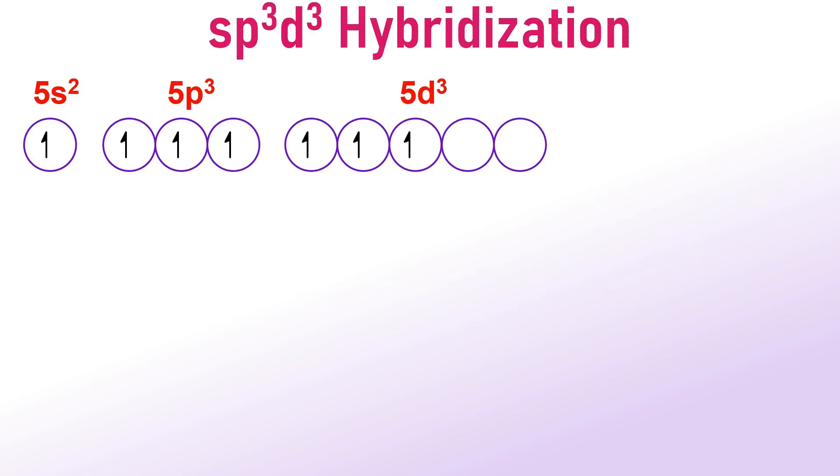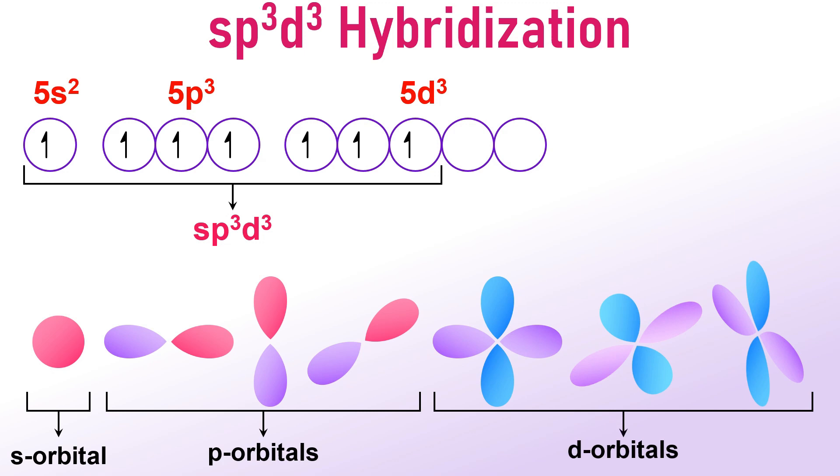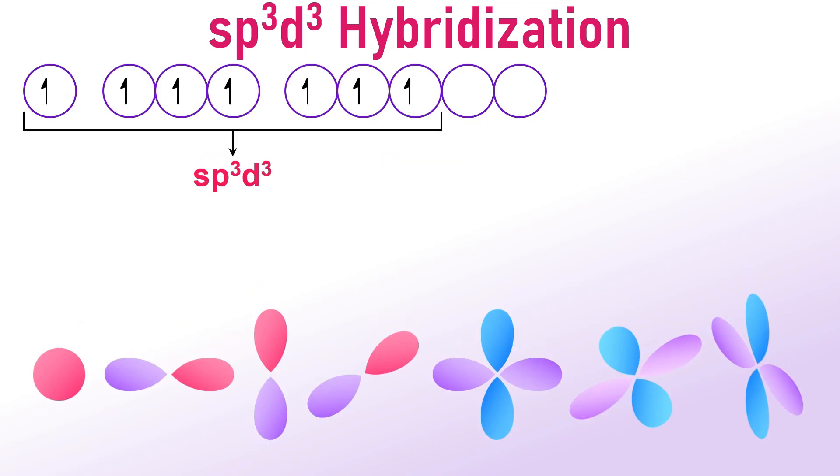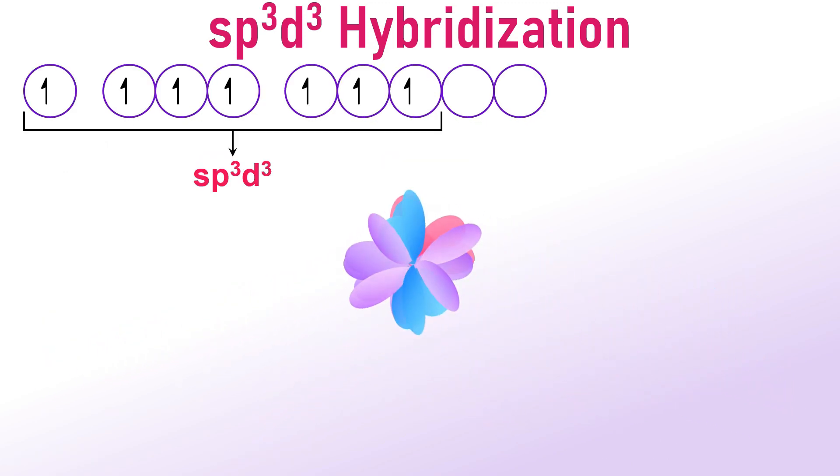The sp3d3 hybridization involves the mixing of 1s orbital, 3p orbitals and 3d orbitals from the fifth shell. As a result, 7 sp3d3 hybrid orbitals are formed and they arrange themselves in a pentagonal bi-pyramidal geometry.